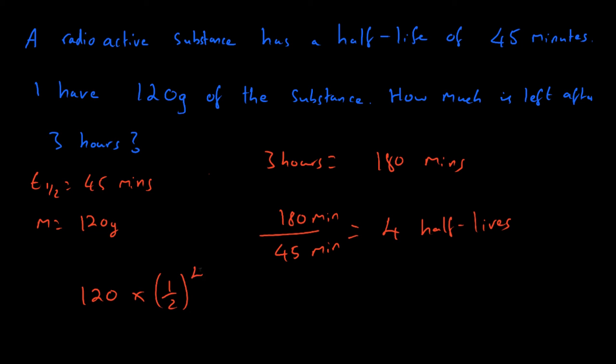So basically it's 120 times a half to the power of four, or that's the same as saying 120 times by - well, one-half to the power of four is one over 16. So really I'm dividing 120 by 16, or times-ing 120 by one-sixteenth if you like. And you do that in your calculator you'll get 7.5 grams. And so the amount of substance I have left is 7.5 grams.